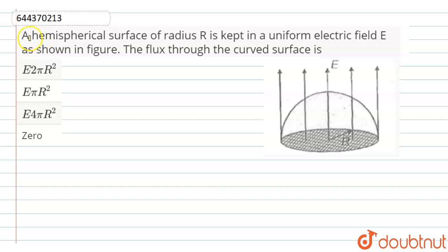Hello dear students, here the question is: a hemispherical surface of radius capital R is kept in a uniform electric field E as shown in the figure. The flux through the curved surface is option 1: E into 2πR², option 2: E into πR², option 3: E into 4πR², and option 4 is 0.